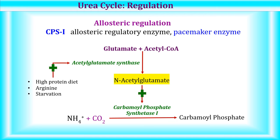In starvation, there is more breakdown of protein to form amino acids; the carbon skeletons are used for energy while the amino groups undergo transamination, releasing ammonia, which is converted to urea through the urea cycle and excreted. This is how the urea cycle is regulated by allosteric mechanism through CPS1 and N-acetylglutamate.